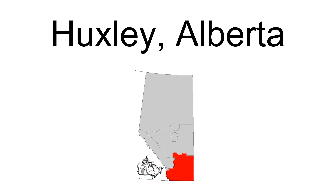Huxley is a hamlet in southern Alberta, Canada, within Neahill County. It is located approximately 160 kilometers (99 miles) northeast of Calgary, Alberta. The first school was built in 1907 and named Ashcroft for John Cortland Ash, the first rancher in the area, predating the surveying of the area into homesteads. The community bears the name of Thomas Henry Huxley, an English biologist.